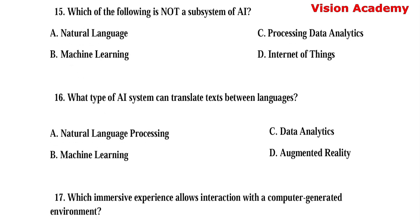Question number 15. Which of the following is not a subsystem of AI? Option A: Natural language. Option B: Machine learning. Option C: Processing data analytics. Option D: Internet of things. Here, option D, internet of things, is the right answer.